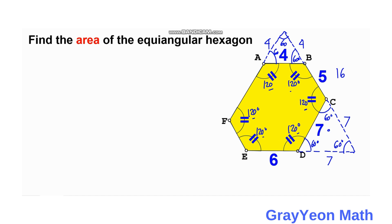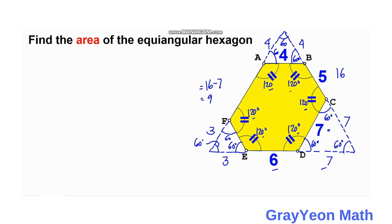If we draw another segment from F such that this angle will be 60 degrees, and from E at 60 degrees, we actually form the largest equilateral triangle. Since one side is 16 and 6 plus 7 is already 13, the remaining piece becomes 3 on each side. And 16 minus 7 equals 9, so this segment becomes 9.